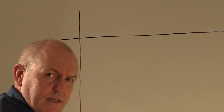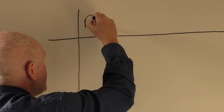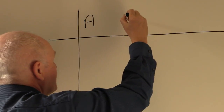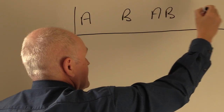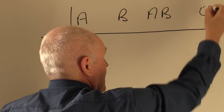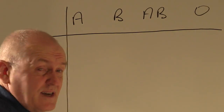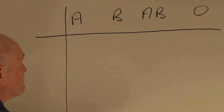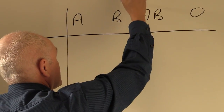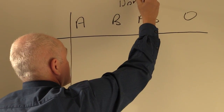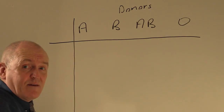What I'm doing here is I'm considering groups A, B, AB and O, or group zero, and I'm going to imagine that these are the donors here — these are donors who are giving their blood.